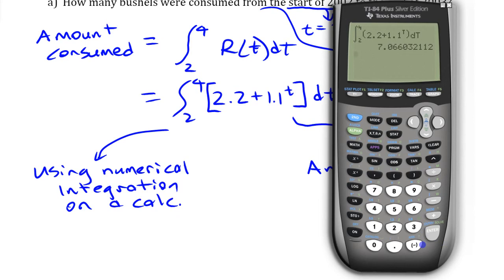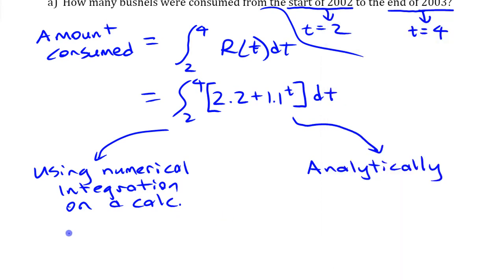It should give you that answer. Approximately 7.066 million bushels. Remember that function is in million bushels.